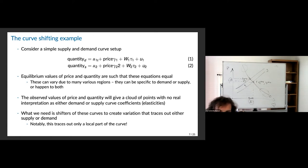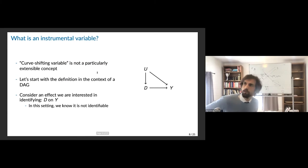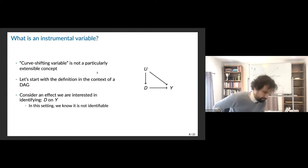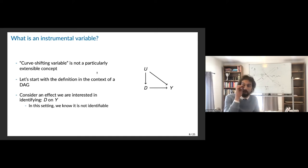We're already embedding a lot of information in the way we model this by assuming linearity. By assuming a linear supply and demand model, we've already assumed a lot about what's going on. The curve-shifting story is useful for supply and demand, but we don't want to think about IV as solely something that shifts curves — we want to think about it as a more general identification approach.